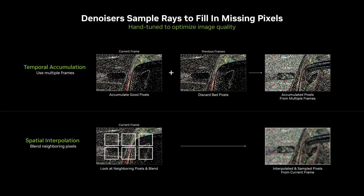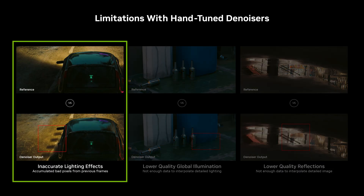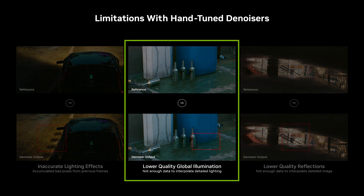Denoisers have a few common challenges. Denoisers accumulate pixels from prior frames, in effect stealing rays from the past in order to increase detail, but they do so at the risk of introducing ghosting and removing dynamic lighting effects. For example, here you can see ghosting that's introduced when the denoiser grabs information from the past frame in the wrong place. And you can also see in this example that the global illumination effects in this image were removed by the denoiser.